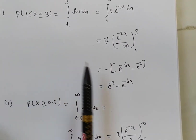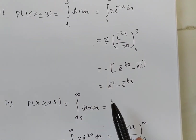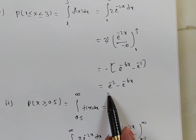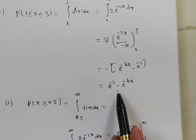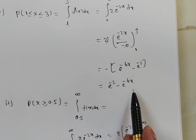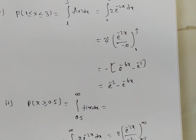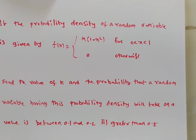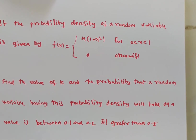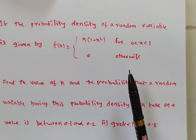To summarize: P(1 ≤ X ≤ 3) equals e^(-2) minus e^(-6), and P(X ≥ 0.5) equals 1/e.